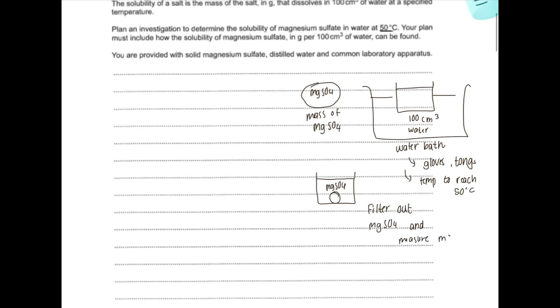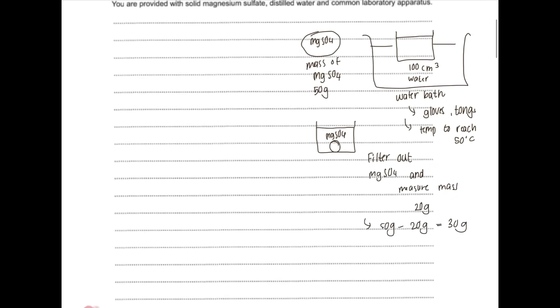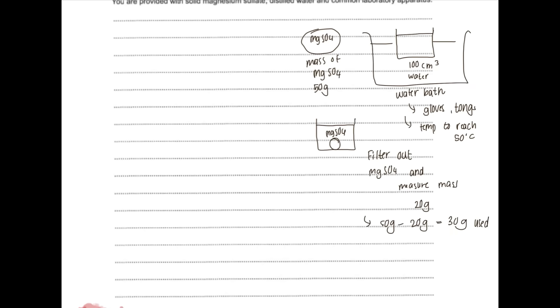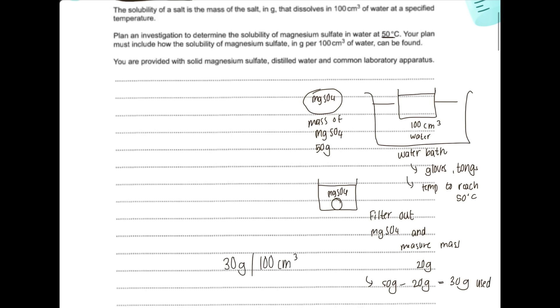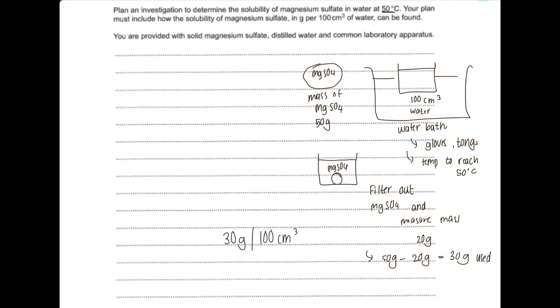Measure the mass of the filtered-out excess magnesium sulfate and subtract it from the original mass. For example, if you added 50 g and 20 g remained undissolved, the mass that dissolved is 30 g. The solubility of magnesium sulfate is therefore 30 g per 100 cm³ of water. Repeat the experiment at least three times and find the average solubility to get the most accurate result.